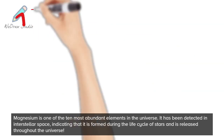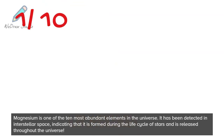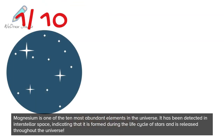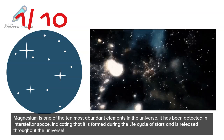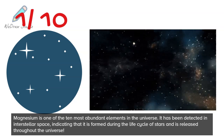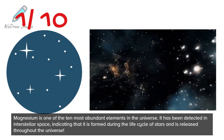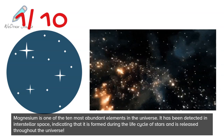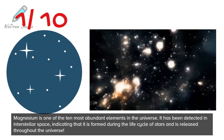Magnesium is one of the 10 most abundant elements in the universe. It has been detected in interstellar space, indicating that it is formed during the life cycle of stars and is released throughout the universe.